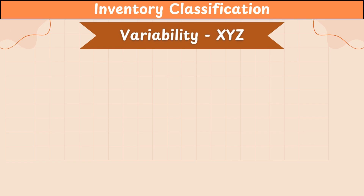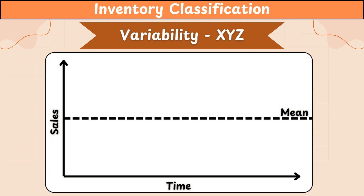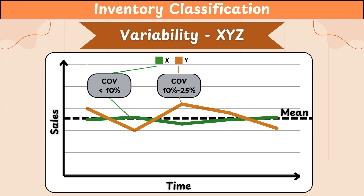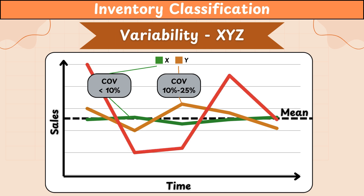Lastly, we have XYZ classification, which sorts items based on demand variability. A useful metric here is the coefficient of variation, which is the ratio of standard deviation to average demand, expressed as a percentage. X items have low demand variability with a coefficient of variation less than 10%. Y items have a coefficient of variation in the range of 10 to 25%, indicating moderate demand variability. Z items have high demand variability with a coefficient of variation over 25%. Again, these numbers are just guidelines and can be altered. This classification helps determine the safety stock levels needed for each item.